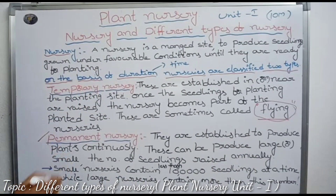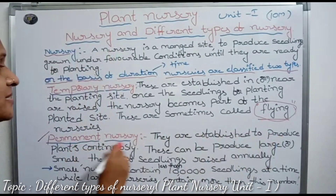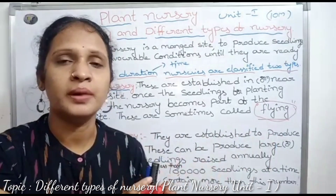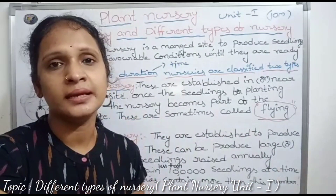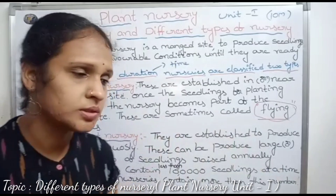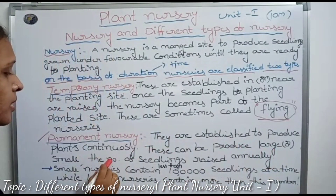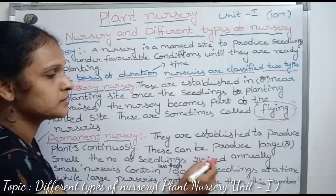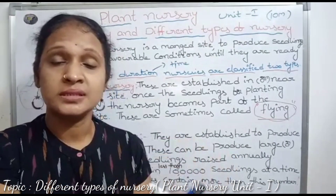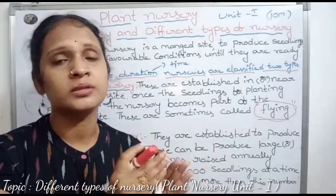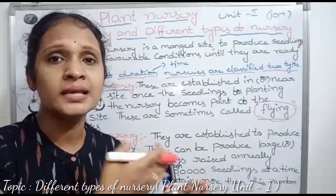Next one: permanent nursery. Permanent nursery means they are established to produce seedlings continuously. Permanent means it produces seedlings continuously. These can be produced at large scale or small scale, and they produce seedlings annually.